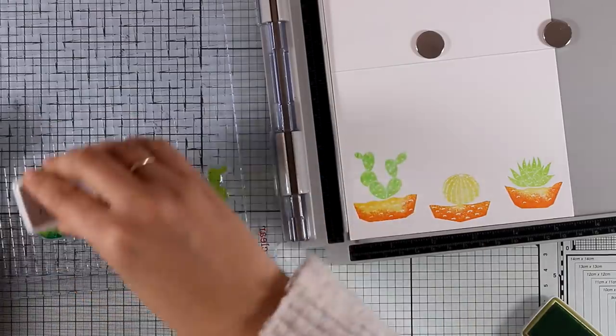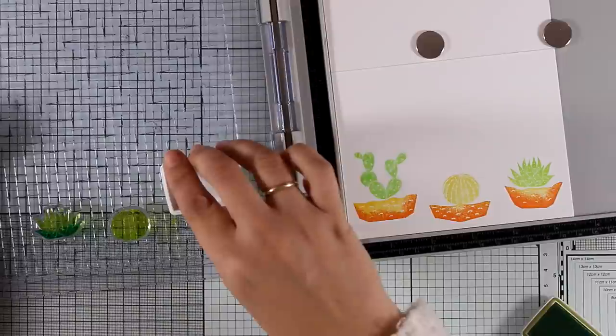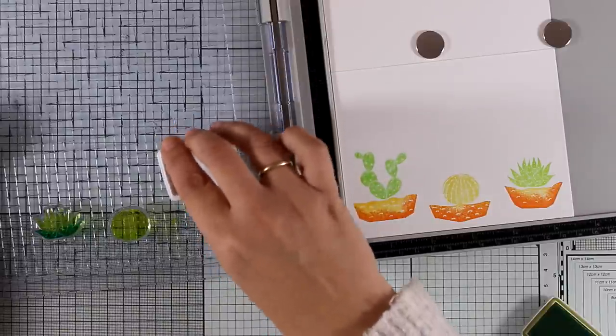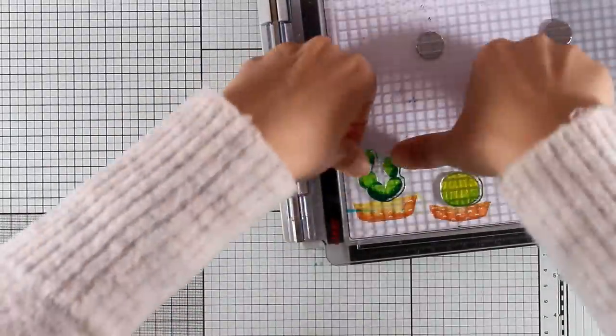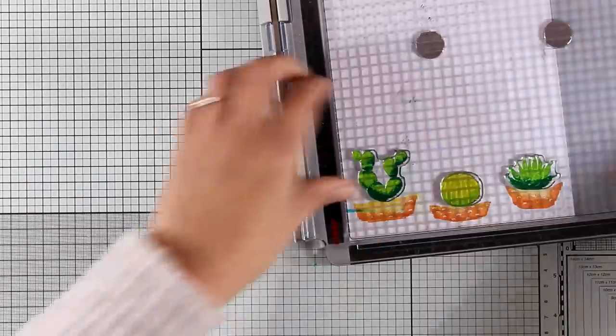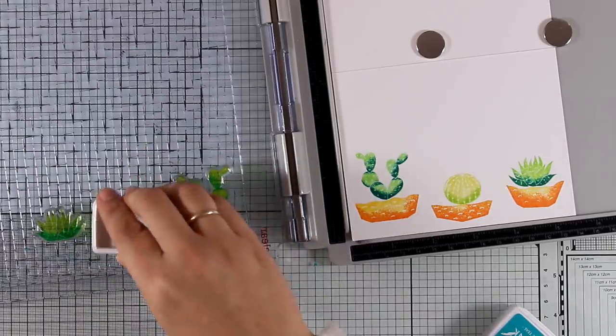By the way, I'm using my new Archival inks to do all the inking today. Here I'm doing again the same technique where I'm adding a darker color in some areas of my plants, which is going to add some shadow. This is a really quick and fun technique to add shadows without doing any crazy coloring.